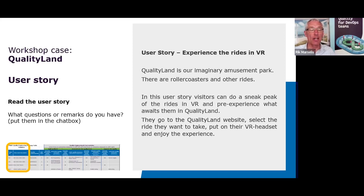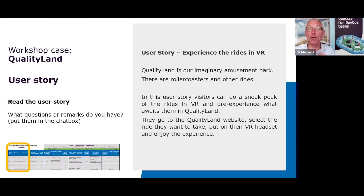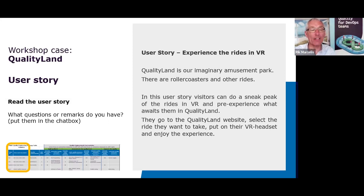The case is about QualityLand — our imaginary amusement park, something like Disneyland. We use QualityLand throughout all of the TMAP examples because most people simply like to go to amusement parks. This park has roller coasters and other rides, and they have a new user story: they want to give visitors a sneak preview of the rides in virtual reality. People at home with VR goggles can experience what awaits them at QualityLand and hopefully get more eager to visit.